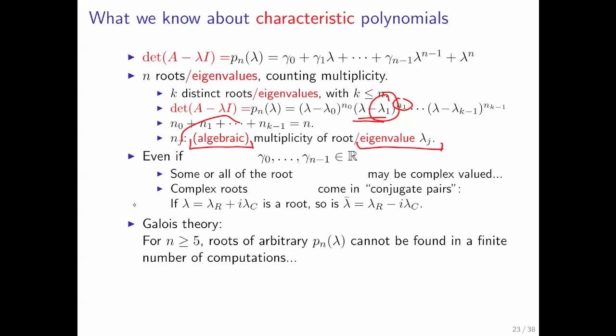We're not going to dwell on this algebraic multiplicity very much. There is also something known as the geometric multiplicity. I'm just mentioning the term because you may hear that term in a subsequent course. Now, even if A has real-valued entries, in which case the coefficients of the characteristic polynomial are themselves real-valued, some or all of the eigenvalues may be complex-valued, and the complex eigenvalues then come again in these conjugate pairs.